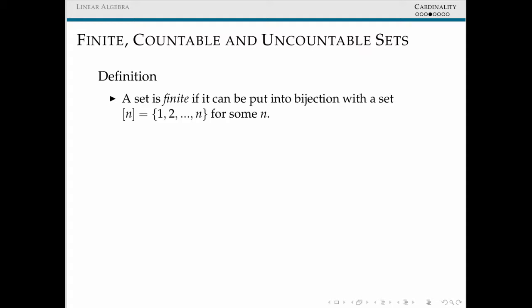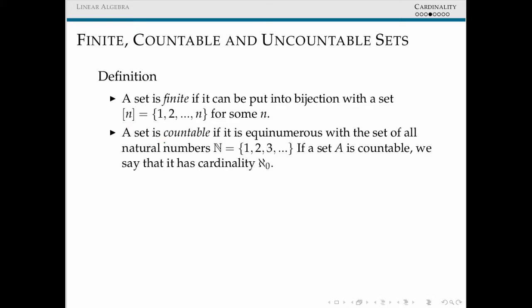In general, there are three main types of sets that we'll consider in linear algebra. We're going to be looking at finite sets, which are sets that are equinumerous to some set of size n, typically the first n natural numbers. We say that a set is countable if we can put it in bijection with the natural numbers. If a set is countable, we typically say it has cardinality aleph-not. And a set is uncountable if it's in neither finite sets or countable sets. There's infinitely many possible finite sets, but there's really only one equivalence class of countable sets.